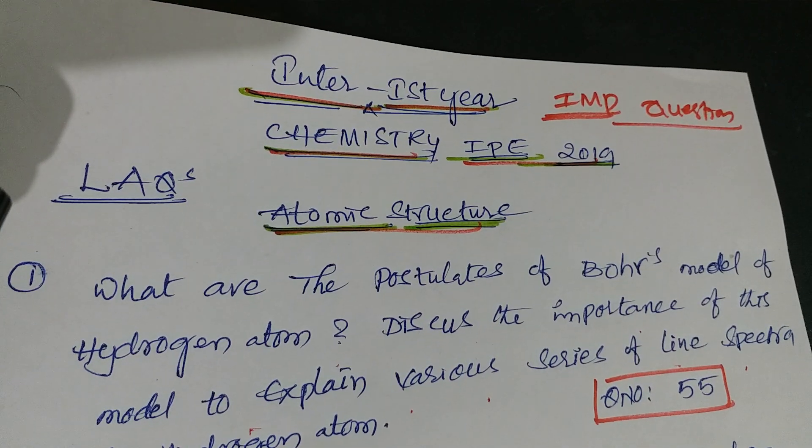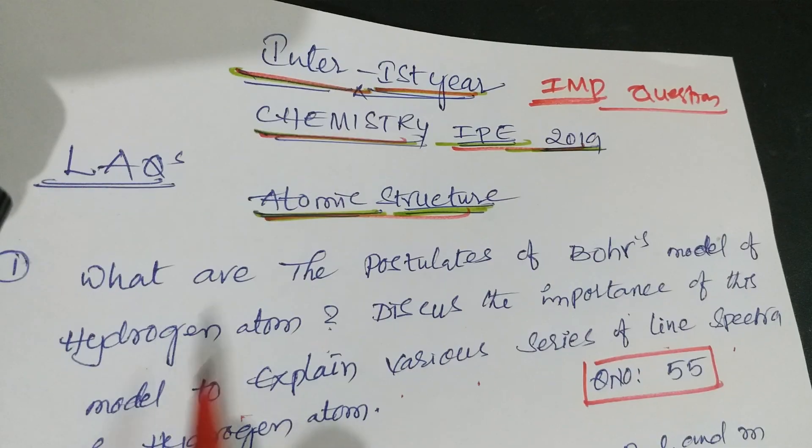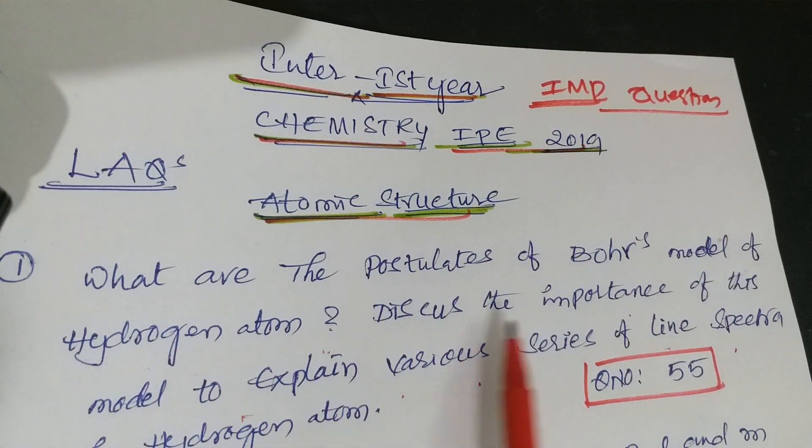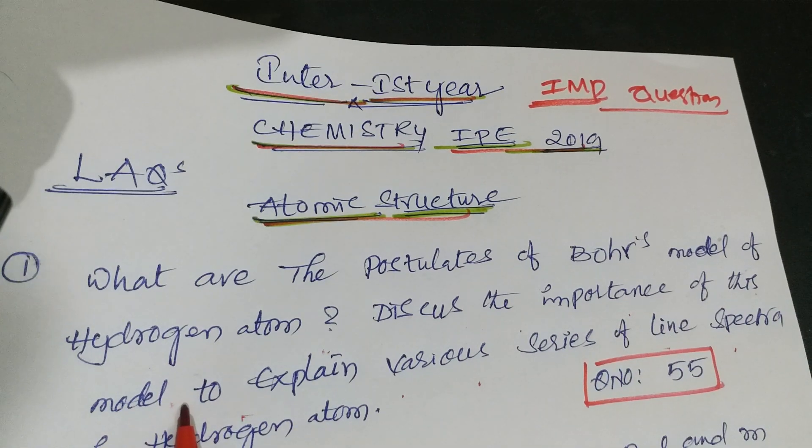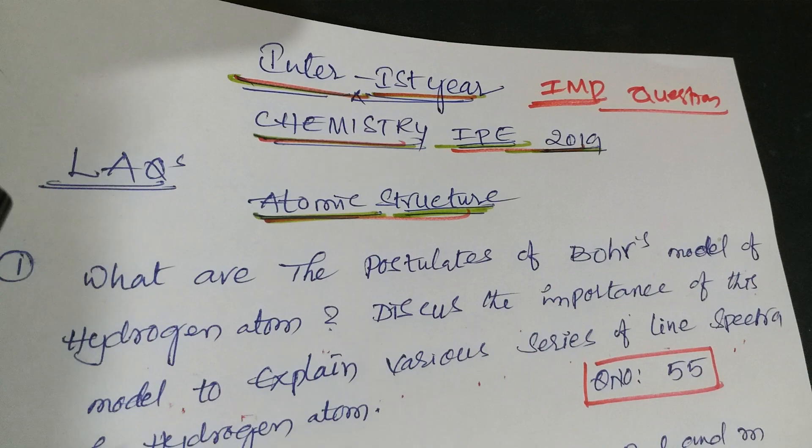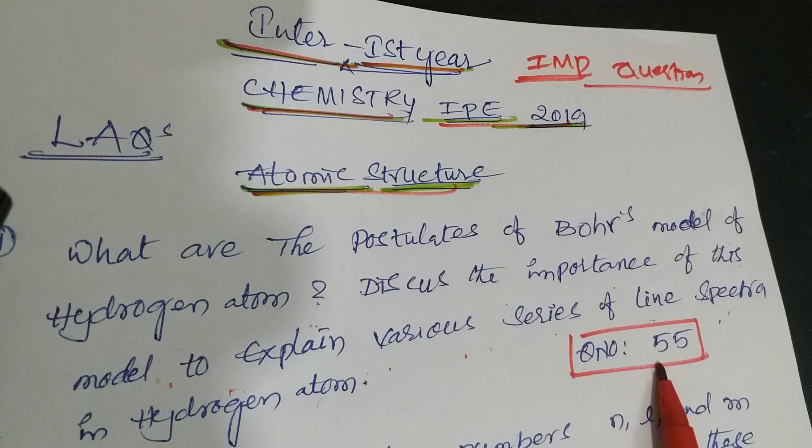First lesson is atomic structure. In atomic structure, first question is: What are the postulates of Bohr's model of hydrogen atom? Discuss the importance of this model to explain various series of line spectra in hydrogen atom. That is question number 55 from Telangana Academy textbook and from other material also.